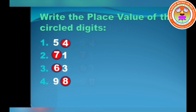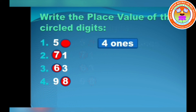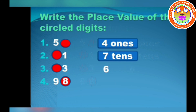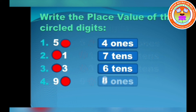Write the place value of the circled digit. 54 — 4 is in the ones place. 71 — 7 is in the tens place. 63 — 6 is in the tens place. 98 — 8 is in the ones place.